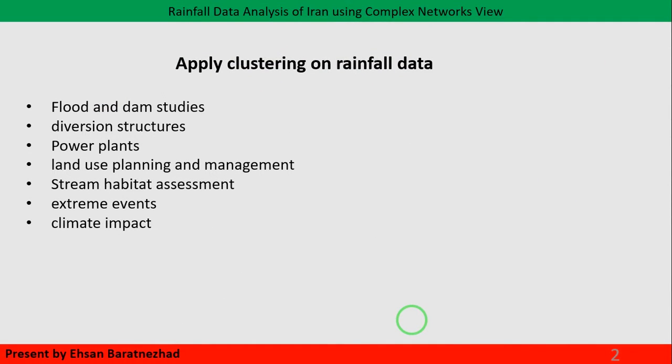By finding the clusters in rainfall data, you will be able to understand storms, droughts, and other extreme weather conditions that contribute to flooding. It can also help us find where it is necessary to build diversion structures or find better places to build power stations. Having a vision about the different rainfall zones can help us analyze climate impacts.